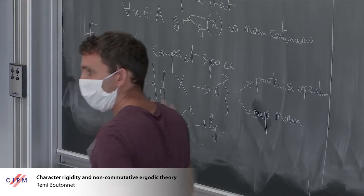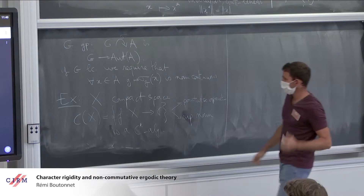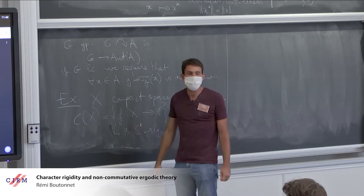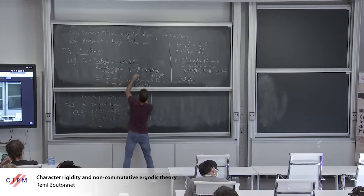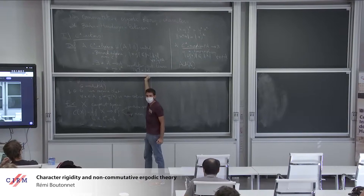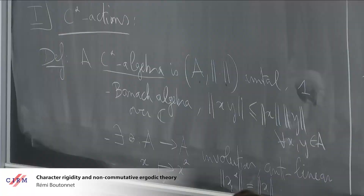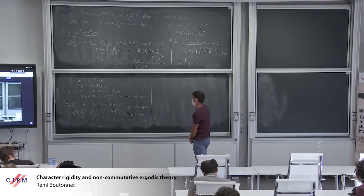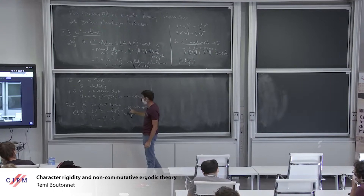Whenever you take a compact space, you get a C*-algebra. If the space is compact, you have the constant function one, which is a unit. I will assume, for simplicity, that my C*-algebras are unital. So this is a fundamental example, and it is a commutative one since you are doing only pointwise product.